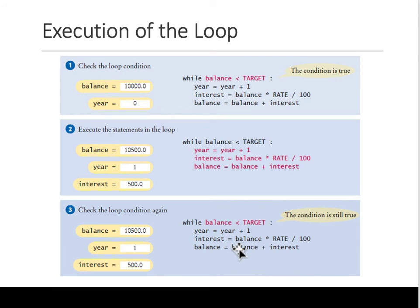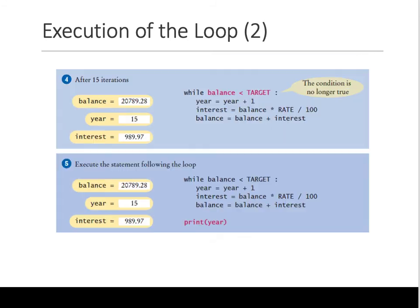Yes, so at this point you're checking whether the condition is still true. Yes, the condition is still true, so you execute these three instructions. That's all that's happening. And it keeps on doing it. After 15 iterations, you are at this point. Now it checks the condition. Is balance still less than target? No. So it will not execute these three lines, but get out of the while loop.